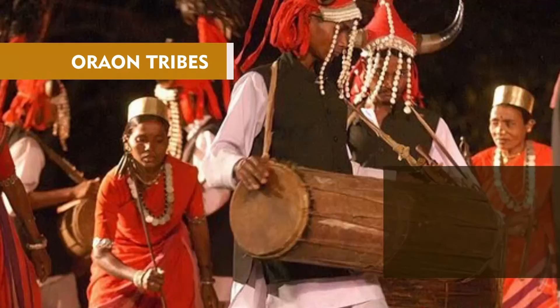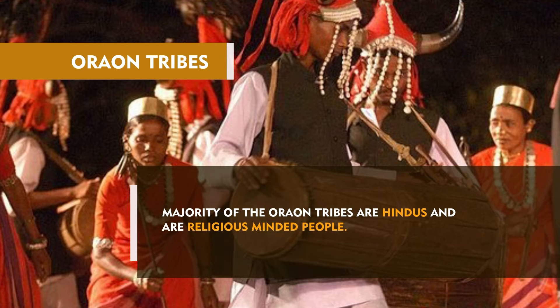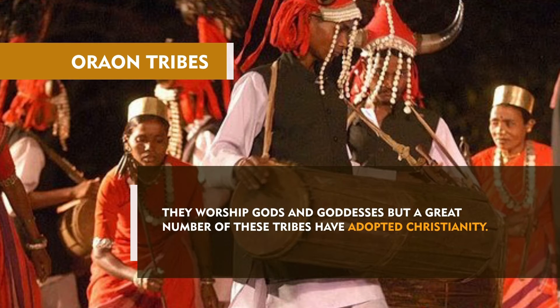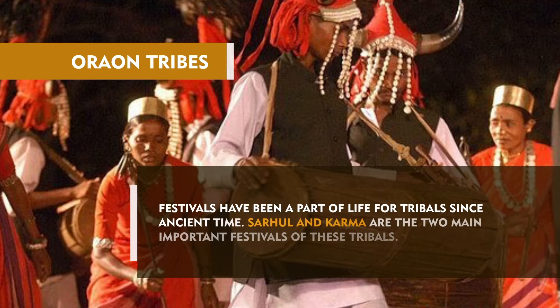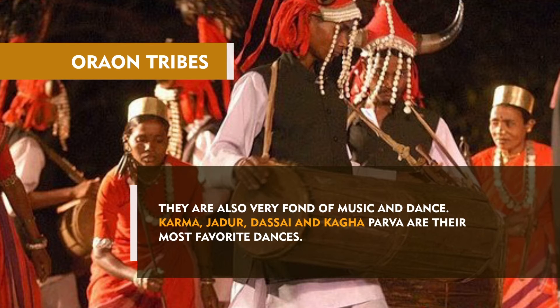Orans are considered to have the second largest population of tribes in Bihar and Jharkhand. Efficient particularly in tea garden works, Orans are believed to have settled in the Chotanagpur plateau centuries ago. Orans speak Kurk language which belongs to the northern subgroup of the Dravidian family of languages. They use the Devanagiri script. Majority of the Oran tribes are Hindus and are religious minded people. They worship gods and goddesses but a great number of these tribes have adopted Christianity. In the ancient days this community used to follow Sarna religion. Festivals have been a part of life for tribals since ancient times. Sarhul and Karma are the two main important festivals of these tribals. They are also very fond of music and dance. Karma,